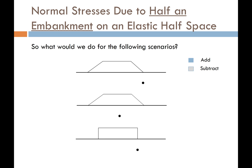But what if we're not beneath the center of the embankment? We can still get creative with geometries using superposition to get our induced vertical stresses. For instance, to get the stress beneath the toe of one of the embankments, I would first do an embankment where the crest width B covers that full dimension and A is the ramp load.